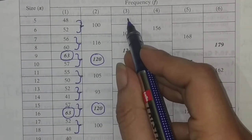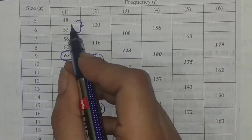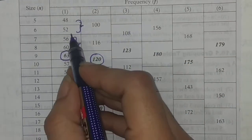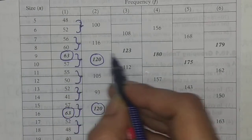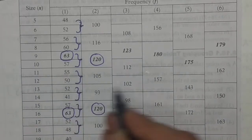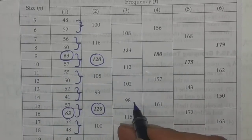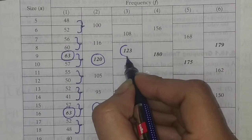Now we repeat the third column again with pairs of two, but we skip the first one. So 52+56=108, 60+63=123, 57+55=112, 50+52=102, 41+57=98, 63+52=115, and 48+40=88. What is the biggest number? 123.